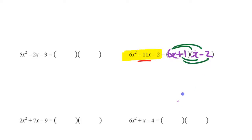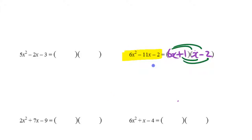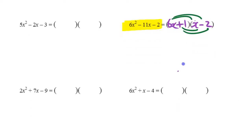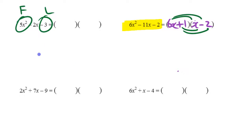That's factoring trinomials. Notice we're not doing it by pure trial and error — we're doing it by educated elimination, reducing the number of possibilities. Multiply it out to check. You try all possibilities for the first term and the last term, then find the arrangement that gives the right middle term. That's the most efficient method.